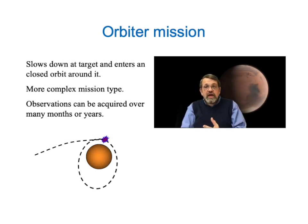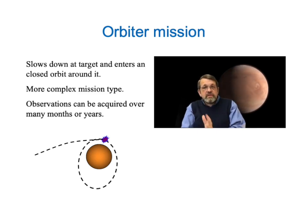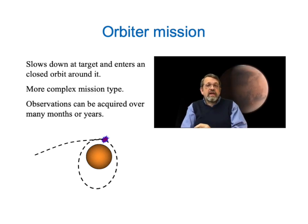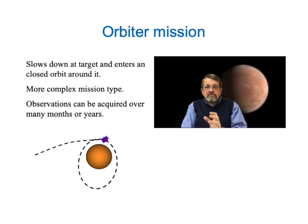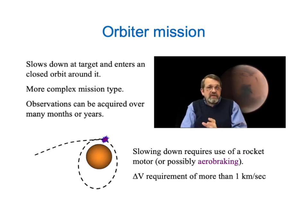The next most complicated mission type is the orbiter mission. In an orbiter mission, the spacecraft approaches its target planet and then fires its own rocket motor to slow down and enter a closed orbit about the planet. That's a much more complex business — it requires a significant rocket maneuver at just the right time. The good news is that an orbiter mission can acquire information about its target for months or years and greatly increase the scientific payoff of the mission. The problem is that slowing down requires a significant rocket motor, or possibly the use of aero-braking, where you use the atmosphere of the planet itself to slow down. The delta-V requirements for this might be one kilometer per second or even more.